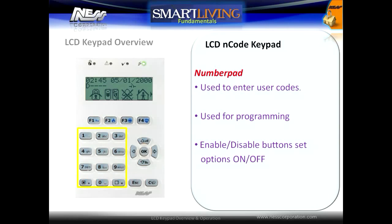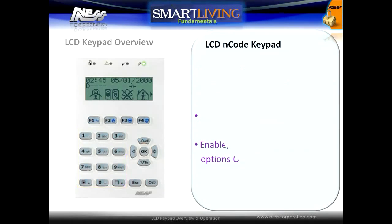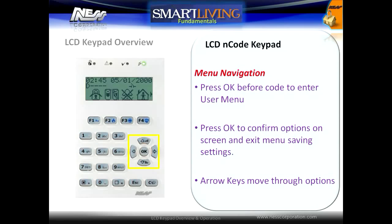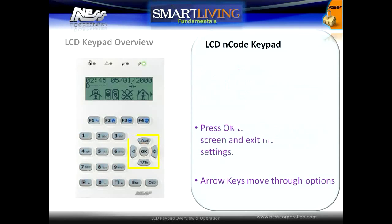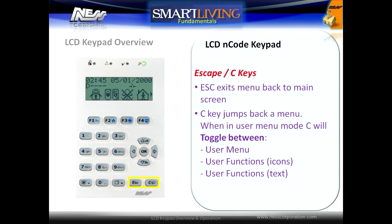The number pad is used for user code entry, for programming, and the enable/disable buttons at the bottom are used to switch options on and off. The menu navigation keys allow the user to navigate through menus. The user menu is accessed by pressing OK before entering a code. The OK button is also used to save any changed settings that a user has made in a menu. The escape key is used to exit the main menu back to the main screen, and will cancel any changes that have been made without pressing OK first.